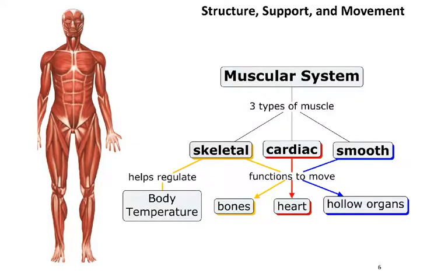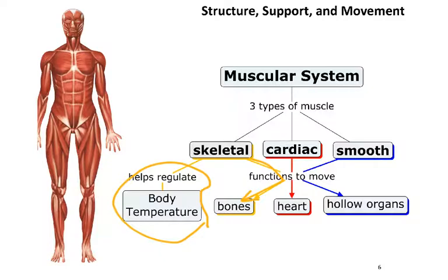After we talk about the skeletal system, we're going to jump into the muscular system. There are three different types of muscle tissue. Skeletal muscle is involved in moving the bones of the skeleton. It also generates a large portion of the heat in our bodies — and it's not just about shivering. Muscles, because they're metabolically active, produce a lot of waste heat, and our bodies use that to help maintain a stable body temperature.